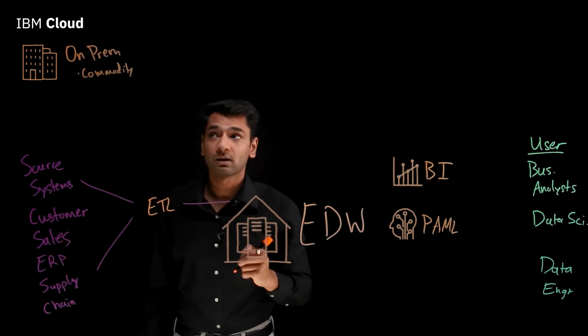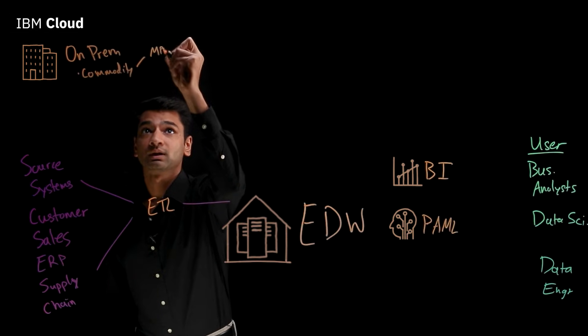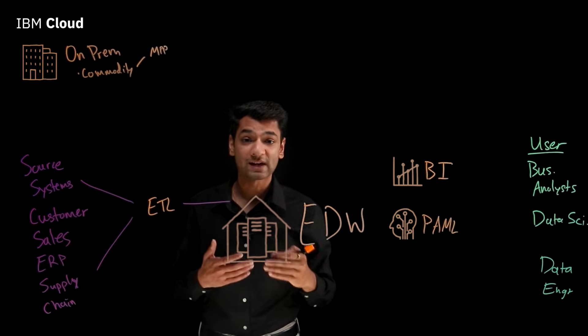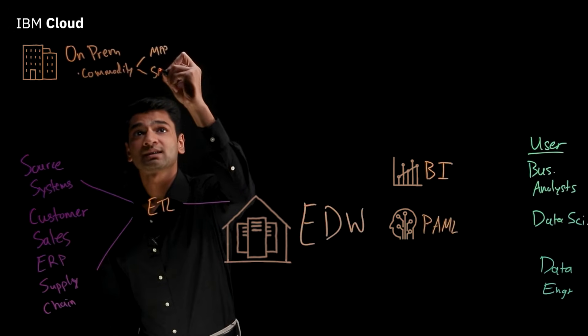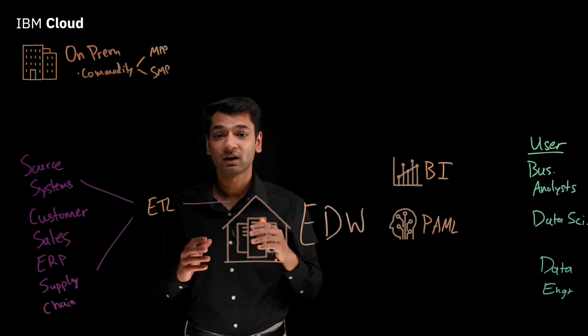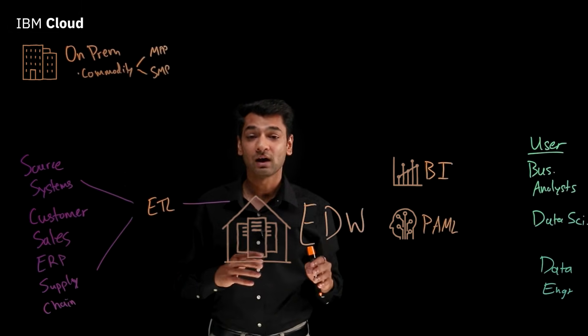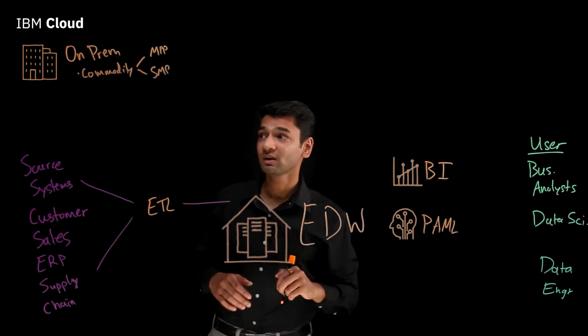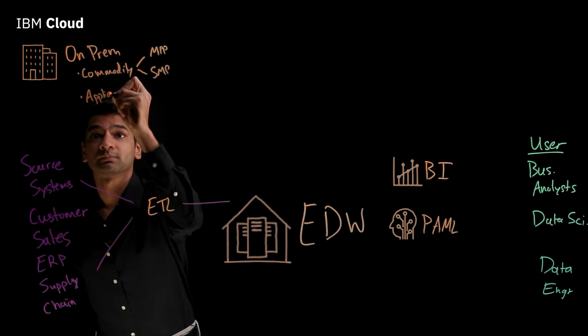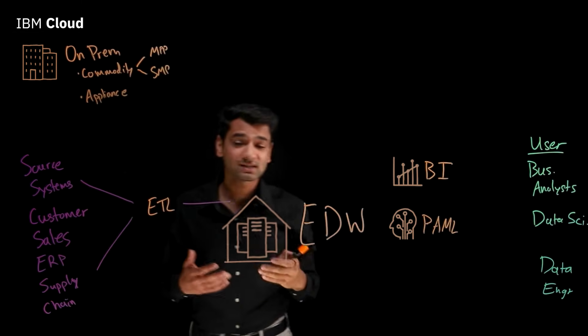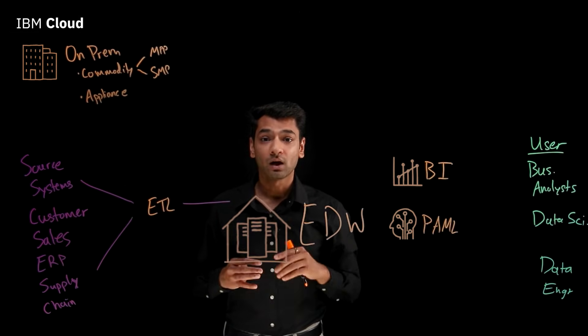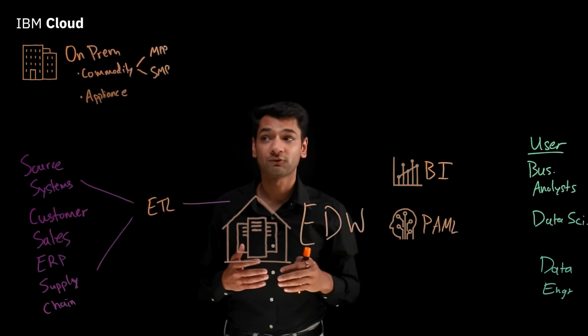We could have our data warehouse running on commodity hardware. This could be set up and structured using either MPP, or Massively Parallel Processing Architecture, where we just add more compute nodes as our workload grows, or using SMP, or Symmetric Multiprocessing Architecture, where typically we have a tightly coupled multi-CPU system that shares resources from one common operating system. The other way is through a purpose-built appliance format. This is typically an integrated stack of CPU, memory, storage, software, all purpose-built and optimized for a data warehouse workload from a single vendor.